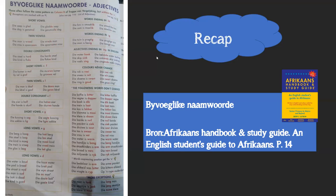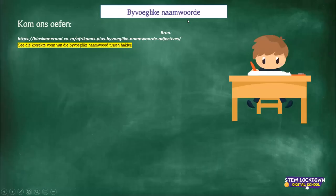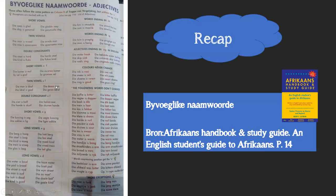What I've done is I've put in the page number here for you. So if you've got this book — the Afrikaans Handbook and Study Guide, an English student's guide to Afrikaans — remember I said this is the Bible for English students to learn Afrikaans. You can open it up on page 14. I quickly want to run through this and then do the activity.